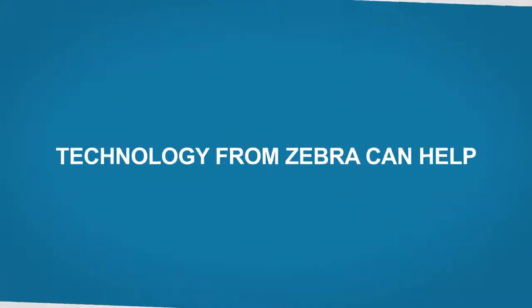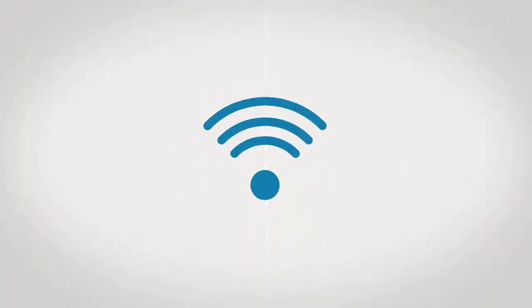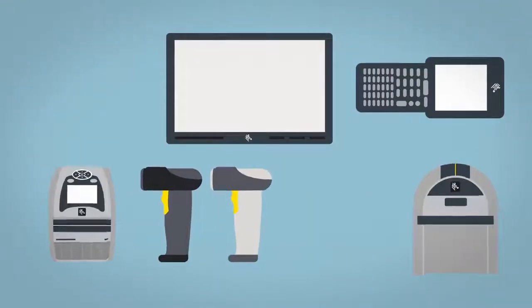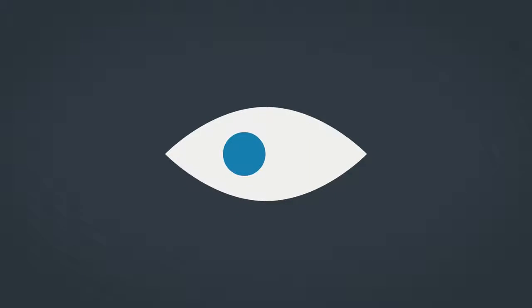But technology can help. Wi-Fi networks, RFID and barcode labels together with mobile computers, scanners and printers can help you see everything, everywhere in real time.